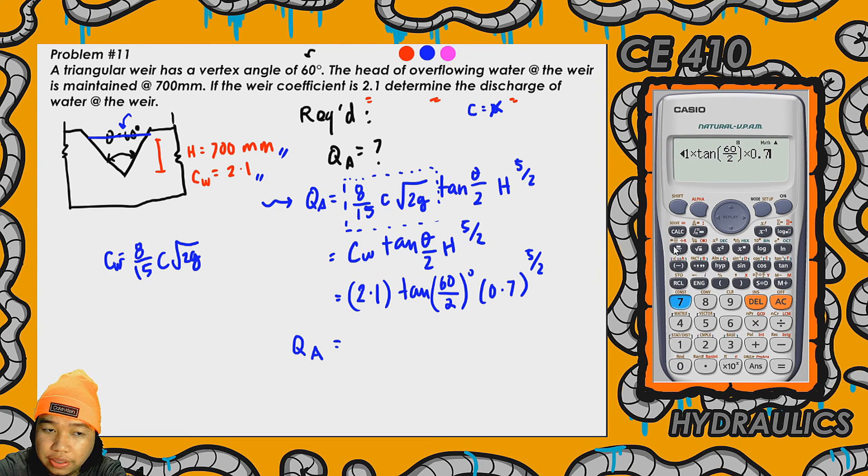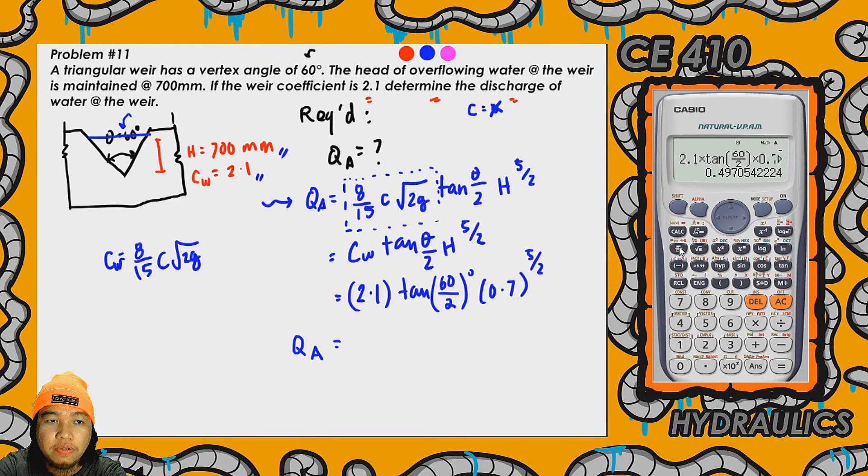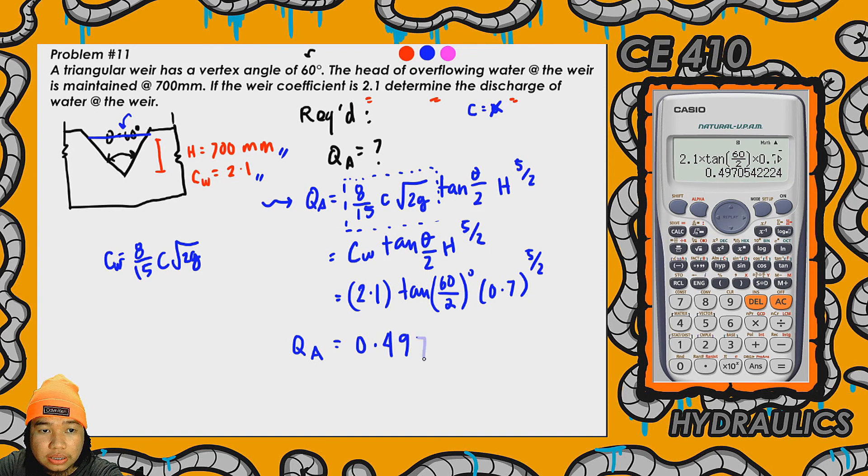So yung derivation ng formula na to ay makikita nyo dun sa aking video lecture. So yung ating computed discharge or actual flow rate dito sa triangular weir na to is 0.497 cubic meters per second. So yun, ganun lang kadali.